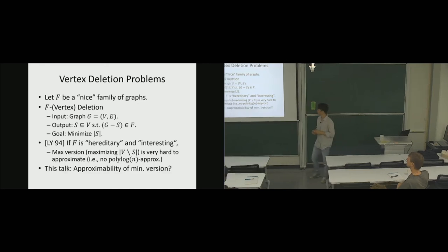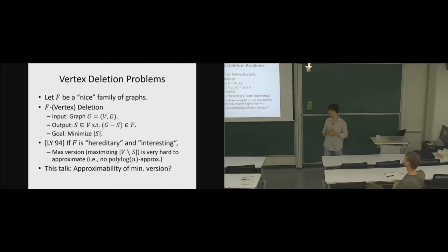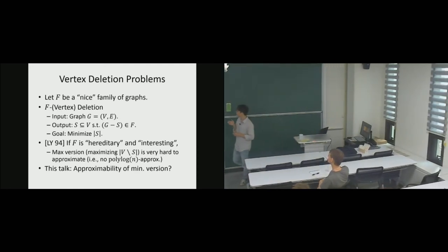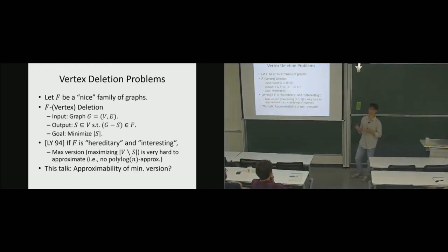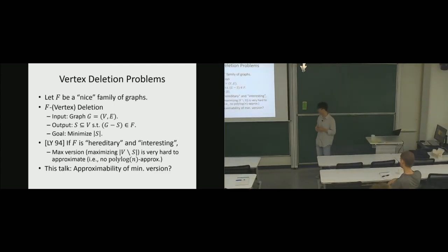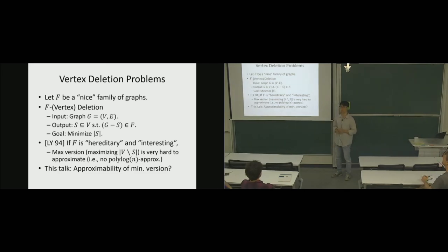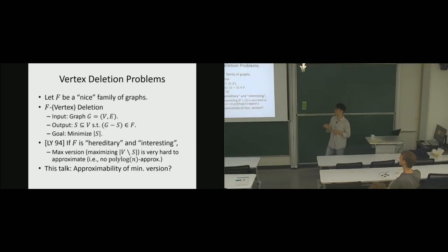An interesting thing is that the max version reduces to independent set, which is hard to approximate, but if you go to the minimization version, the complement of an independent set is a vertex cover, which admits a very simple 2-approximation algorithm. So the theme of this talk is: what's the approximability of the minimization version? Will everybody have a 2-approximation algorithm, or will some not? I'll show you a few examples where it's not.